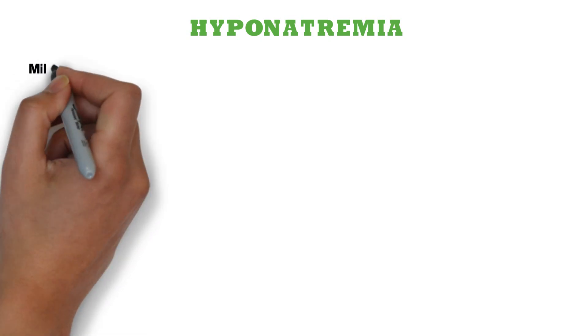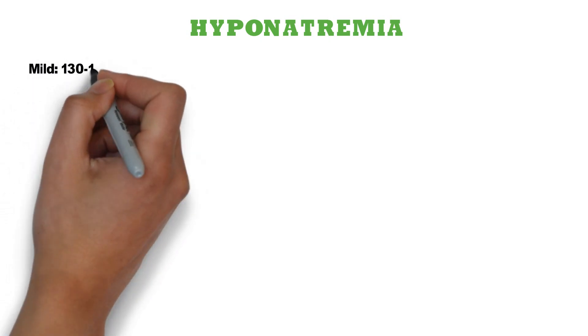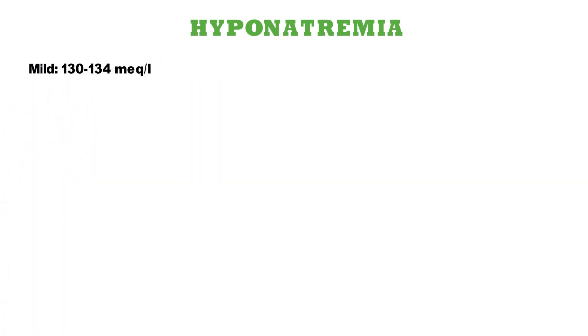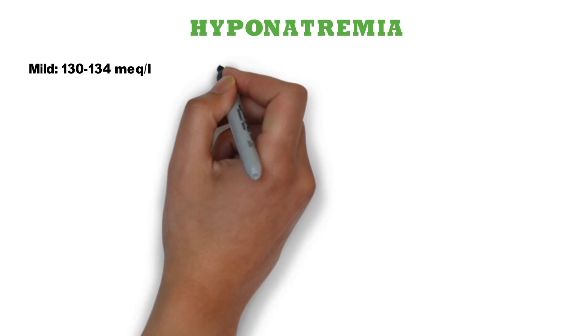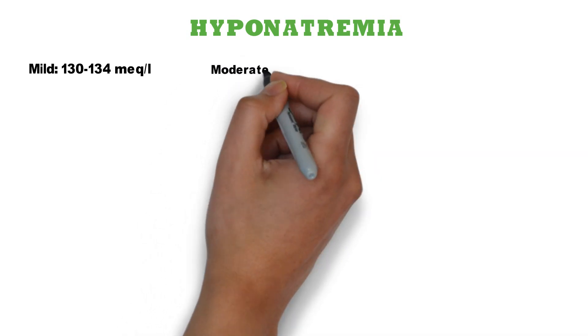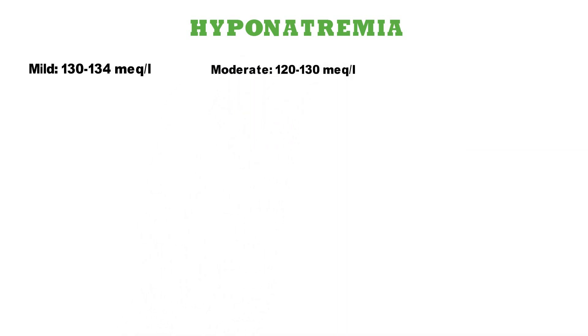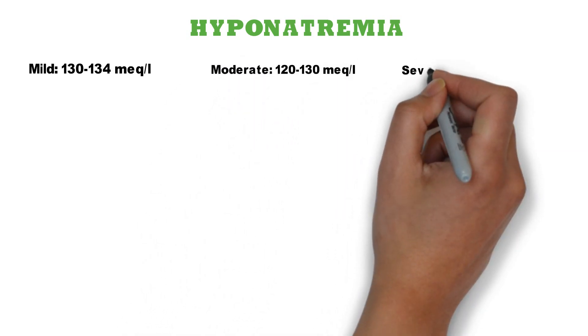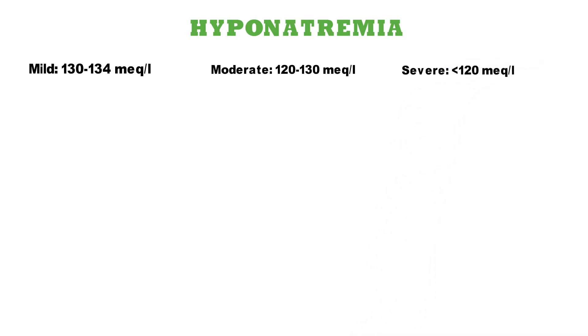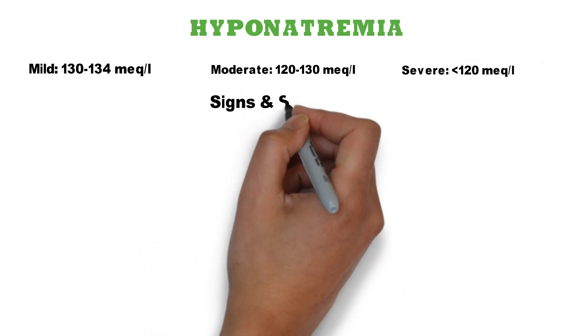As we all know, normal serum sodium is 135 to 145 mEq/L. Hyponatremia is serum sodium less than 135 mEq/L. It can be categorized into mild, moderate, and severe hyponatremia — severe being less than 120 mEq/L.